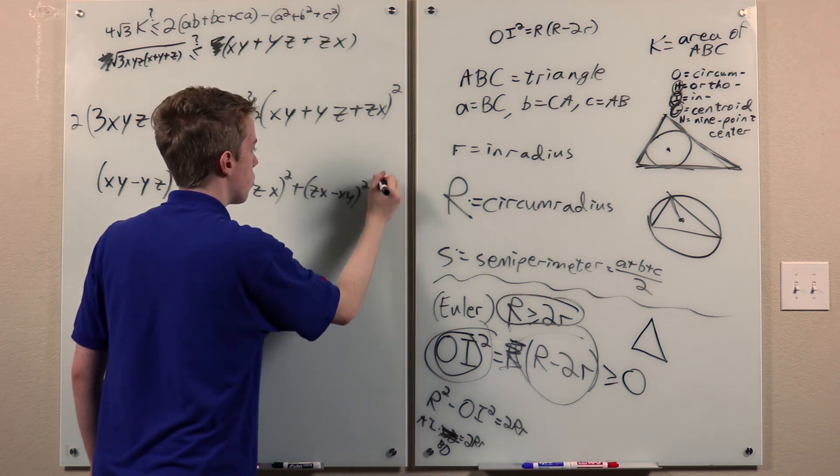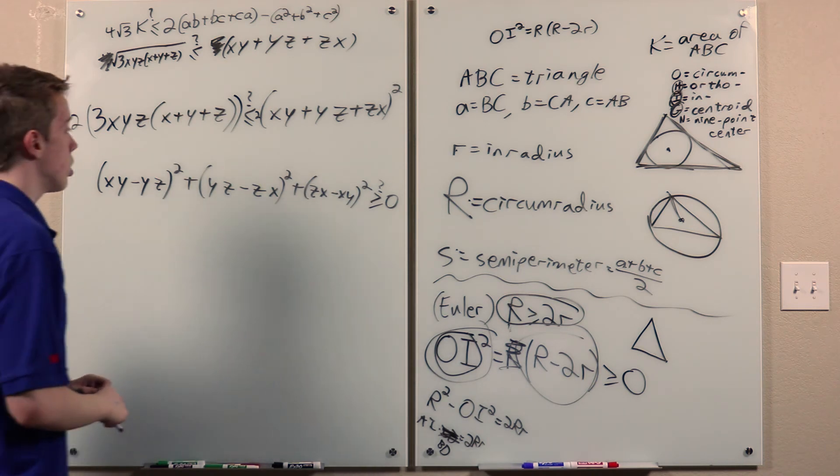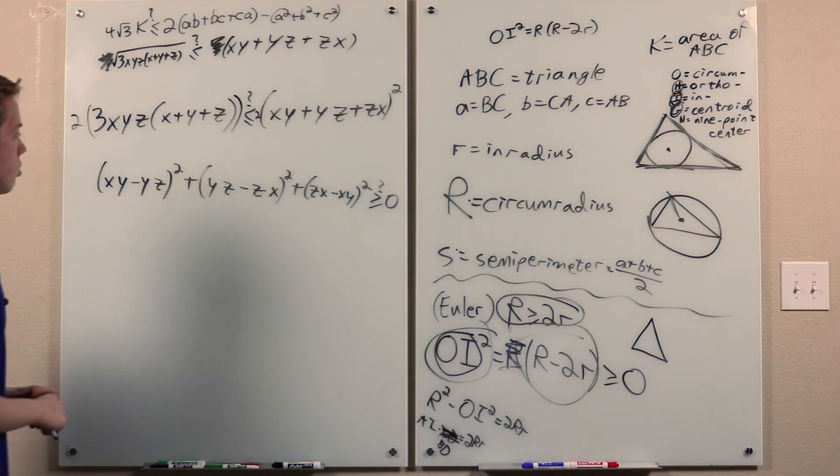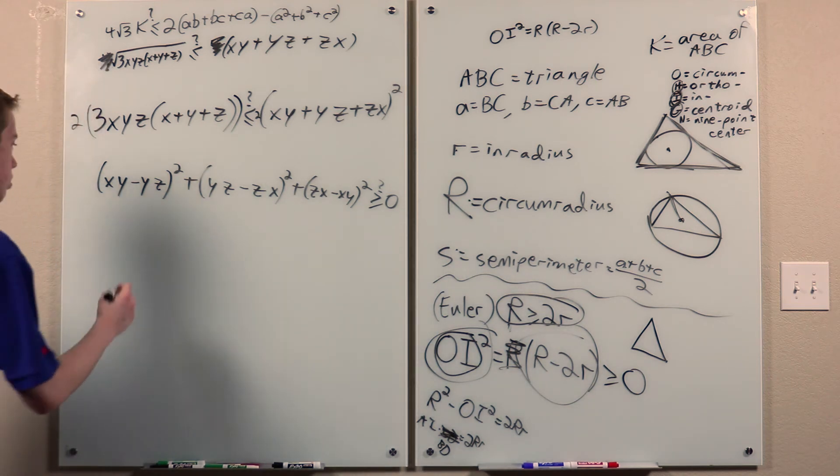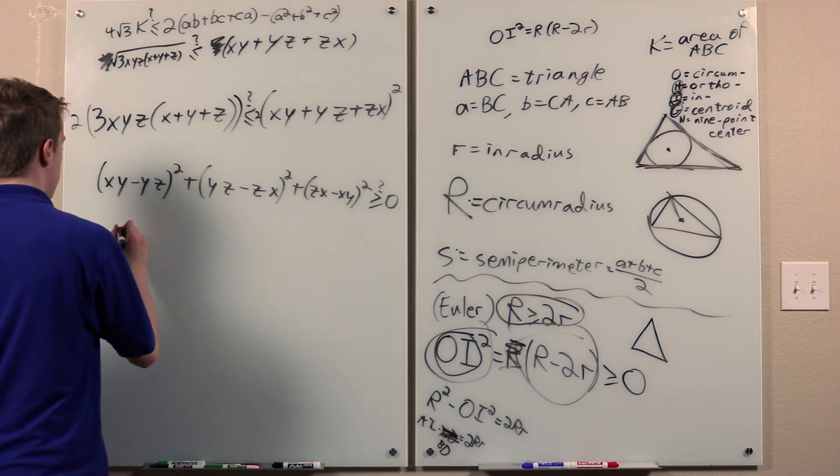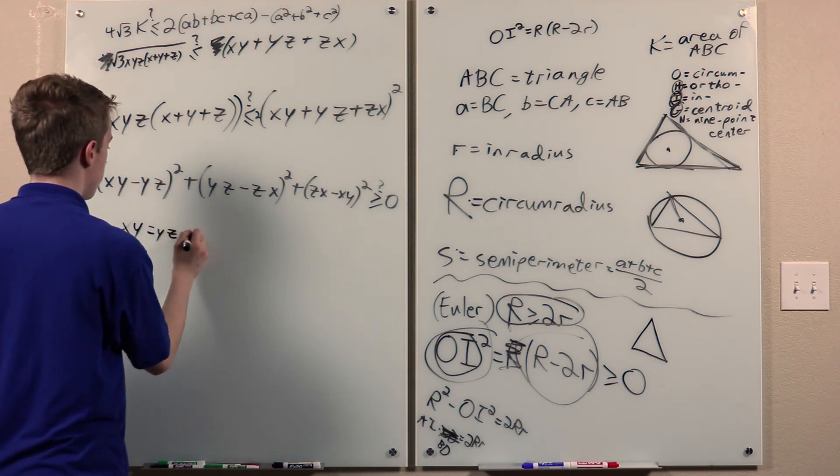Which is, of course, true by the trivial inequality. So, for x, y, and z to be all positive, and to have equality... and this is true by the trivial inequality. So, that proves this.